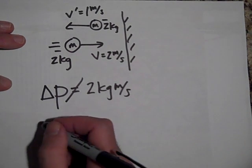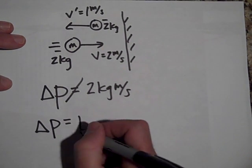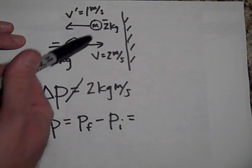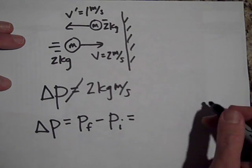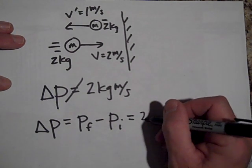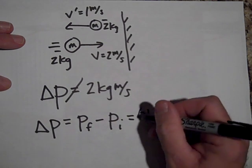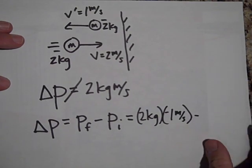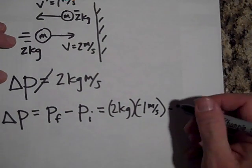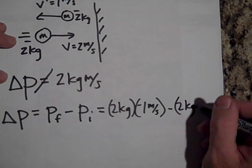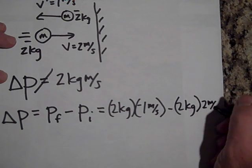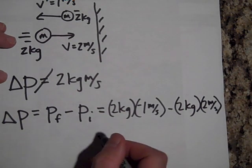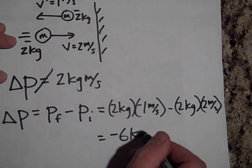What it is, is it's P final minus P initial. And one of these has to be negative. Let's call P final negative, so it's going to be 2 kilograms times a negative 1 meter per second minus the initial, which is 2 kilograms times 2 meters per second. So that's going to be a total of negative 6 kilograms meters per second.